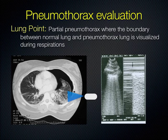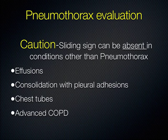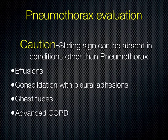One caution before we move on: there are other things that can cause lack of sliding. If a patient has a chest tube tacking down their lung, their lung won't slide when they're breathing. If they have a bleb or adhesions from a prior infection, sometimes the lung does not slide normally. But you would still be able to see B lines, and on M-mode you'd still see the sky, ocean, beach. Lack of sliding alone — be careful. Don't make your diagnosis just on that.